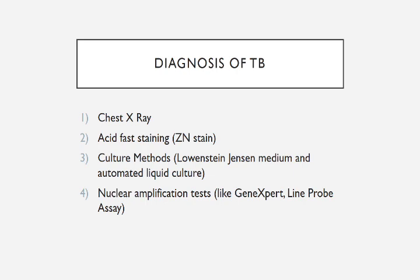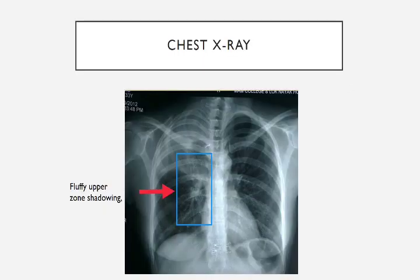Then the last step is nucleic acid amplification tests like GeneXpert and line probe assay for detecting resistance to anti-tubercular drugs. In this example, you can see the fluffy upper zone shadowing in the chest X-ray.